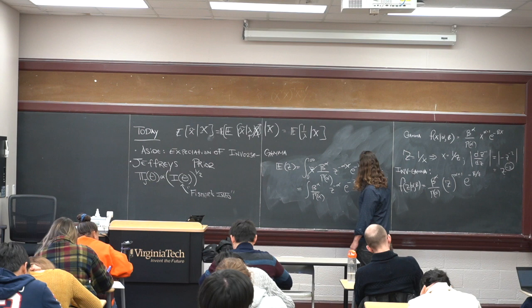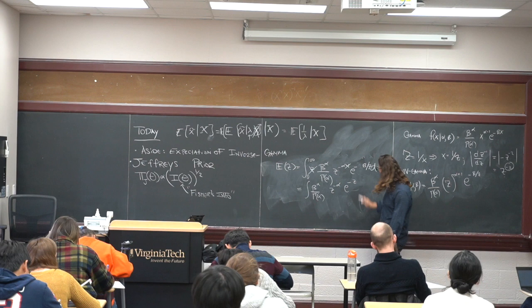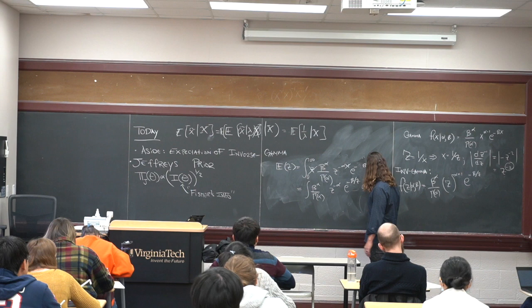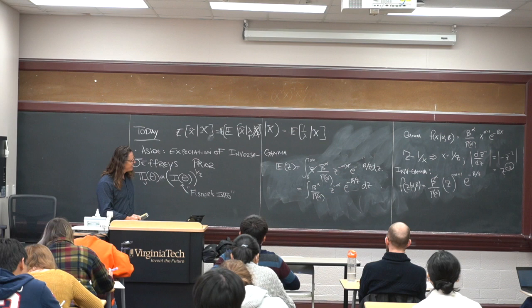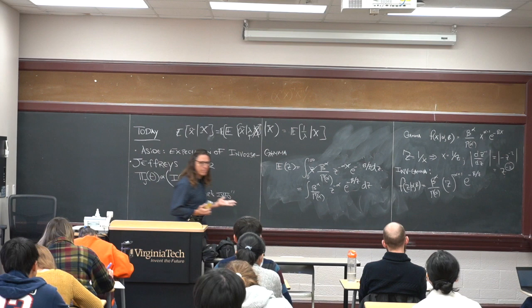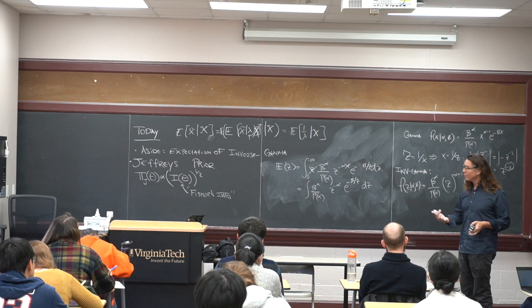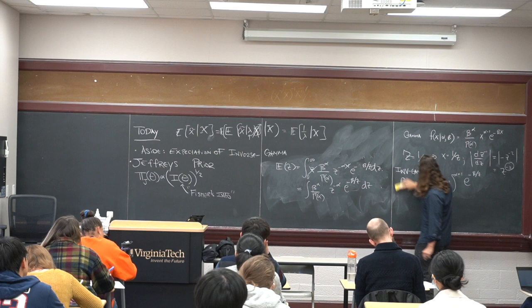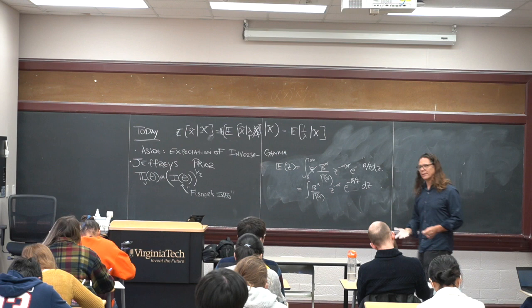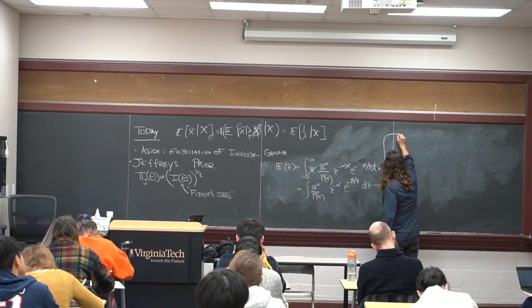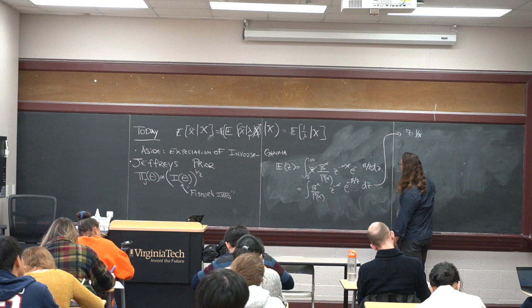This is equal to beta^alpha / Gamma(alpha) times z^(-alpha) e^(-z*beta). It seems like a big mess. Let's put it into a form we're more familiar with — the gamma form. We'll do this transformation back the other way. If I replace z = 1/x, the Jacobian gives x^{-2}. So substituting 1/x in, I get an integral over x with x^(alpha-1) e^(-beta*x), which is the gamma kernel.